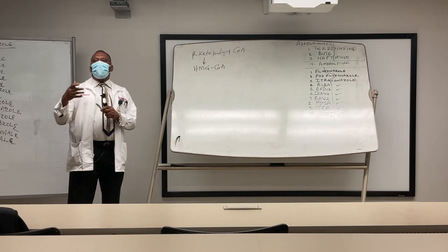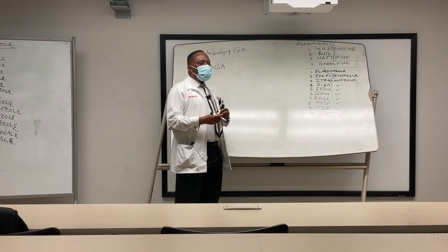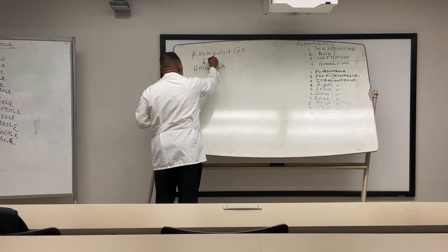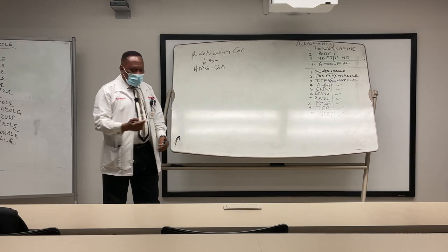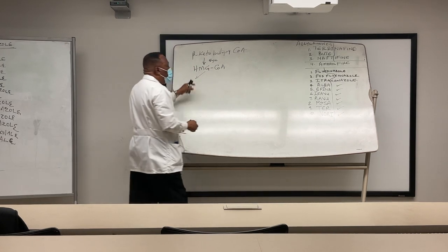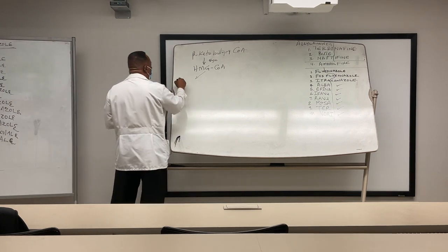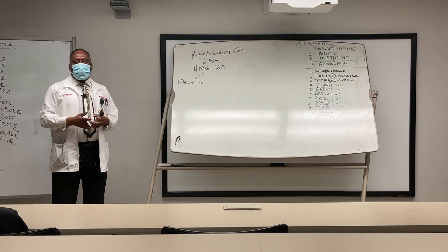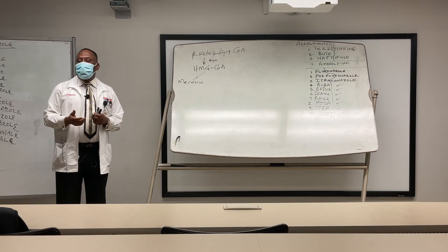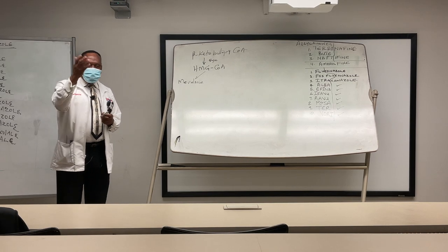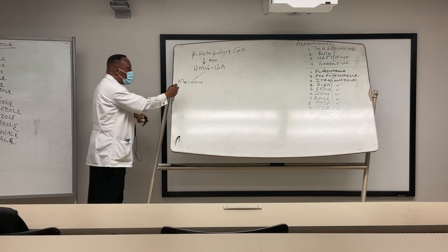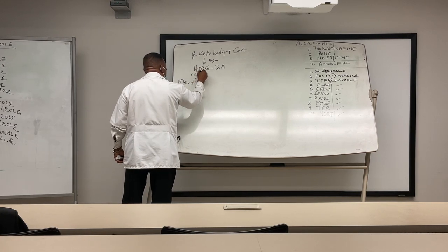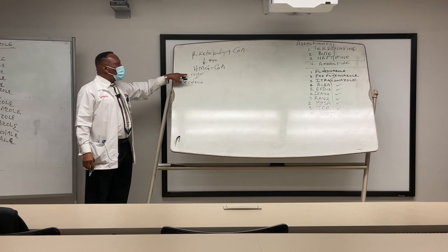Synthase works here to produce HMG-CoA. When HMG-CoA is produced, it can be reduced to mevalonic acid. The brand name for lovastatin is Mevacor — that's where the name comes from. This is where your statins will work: HMG-CoA reductase, not HMG-CoA synthase. If HMG-CoA lyase is present, it will convert HMG-CoA to acetoacetyl-CoA, which is a ketone body precursor.